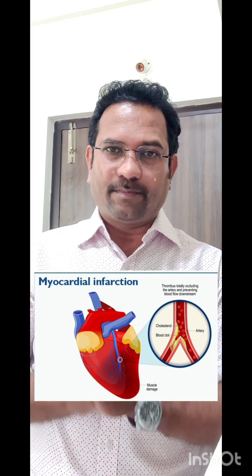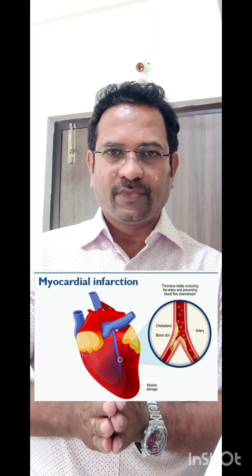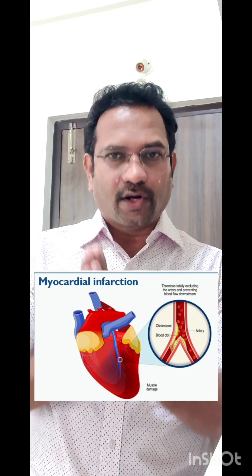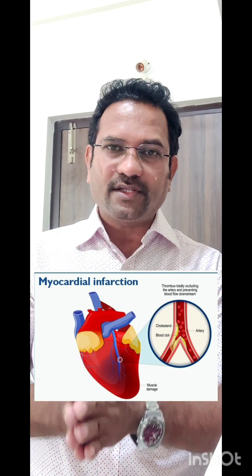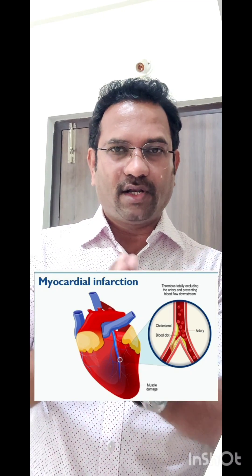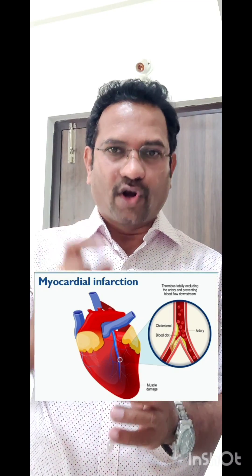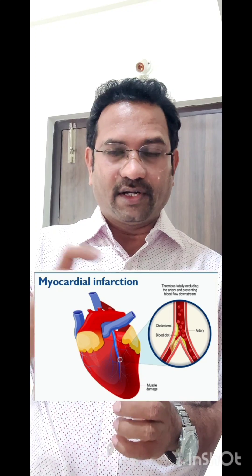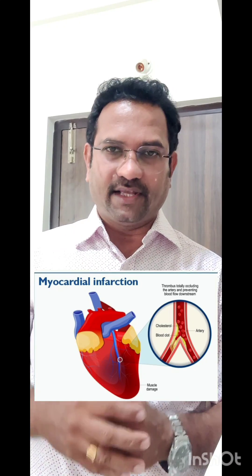Coronary blood vessels supply blood to heart tissue. So when coronary blood vessels are blocked, it is called myocardial infarction. If this occurs for a long term, it results in myocardial cell death.